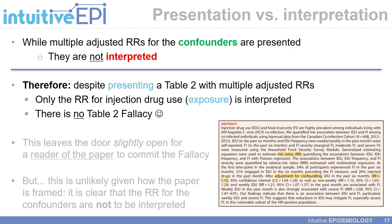However, it is true that this leaves the door slightly open for a reader of the paper, such as another researcher or the public media, to commit the fallacy when reading my work. I hope this is unlikely given how the paper is framed — it should be very clear from the abstract down that the only risk ratio to be discussed is that of injection drug use's impact on food insecurity.